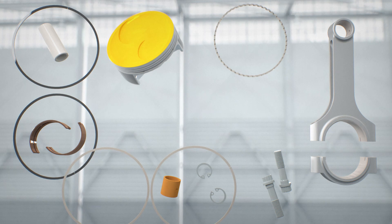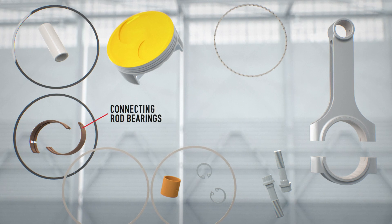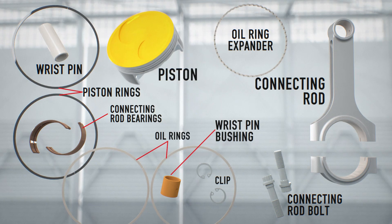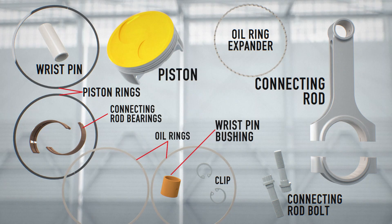The connecting rod bushings are another wear item that affect proper mechanical operation on the crankshaft. You have learned in other chapters that bearing clearance maintains proper engine oil pressure. As this bearing wears, it will require replacement to help restore oil pressure if they are worn beyond service limits.